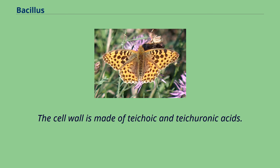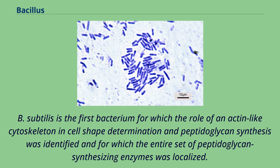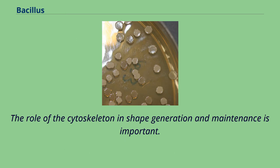The cell wall is made of teichoic and teichuronic acids. B. subtilis is the first bacterium for which the role of an actin-like cytoskeleton in cell shape determination and peptidoglycan synthesis was identified, and for which the entire set of peptidoglycan-synthesizing enzymes was localized. The role of the cytoskeleton in shape generation and maintenance is important.